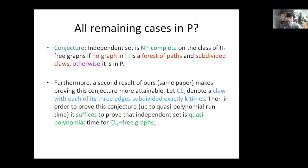A second result in our same paper makes proving this conjecture more attainable. If we let CLK denote the claw with each of its three edges subdivided exactly K times, then in order to prove this conjecture — at least at quasi-polynomial runtime — it suffices to prove that independent set is quasi-polynomial time on CLK-free graphs. As long as we can prove that, the conjecture replacing P with quasi-polynomial would be settled.